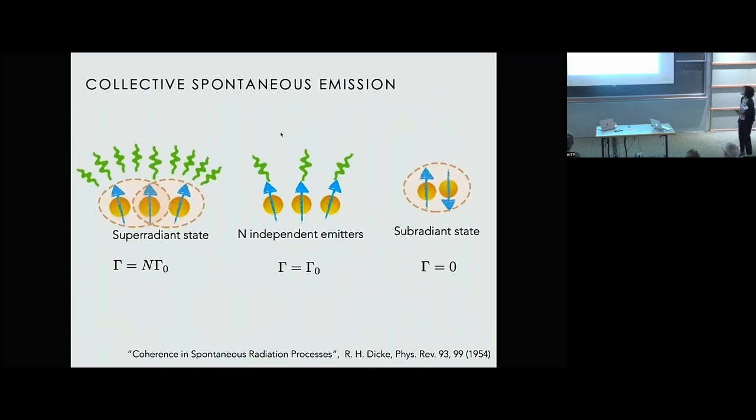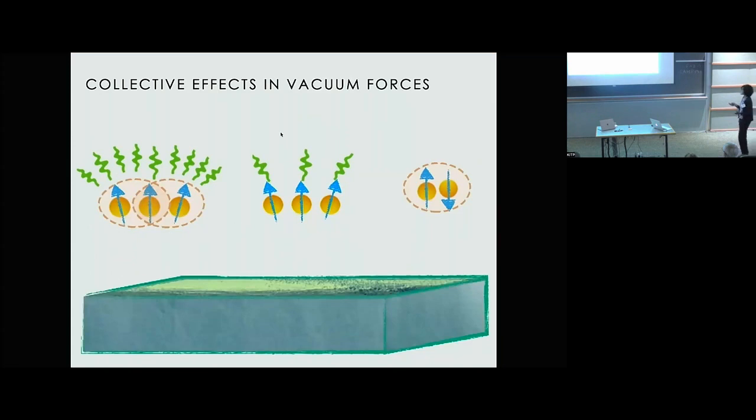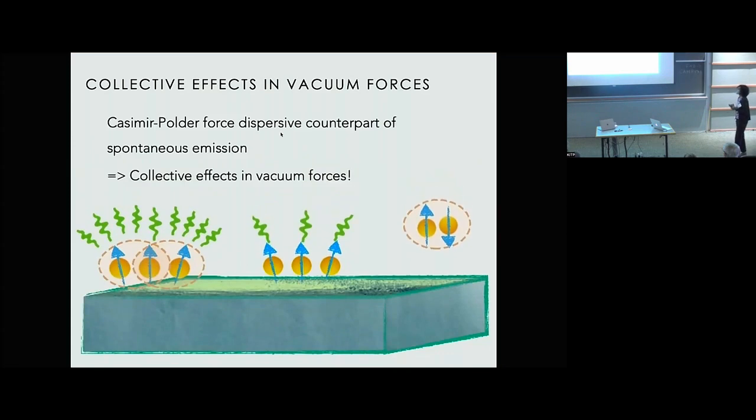So collective effects have been known in the context of spontaneous emission for some time, since 1954. And the basic idea is that if you have n independent emitters that each emits with a rate gamma zero, if you prepare these emitters in a super radiant state, it is possible to enhance the total emission by a factor of n, for example, and you can also prepare these emitters in a sub radiant state, where you can suppress the emission, even down to zero. And now what if we take these atoms and collective states and put them near a surface? We expect that since there is an analogy between Casimir forces and spontaneous emission being the dispersive and dissipative counterparts of each other, there should be collective effects in vacuum forces as well.